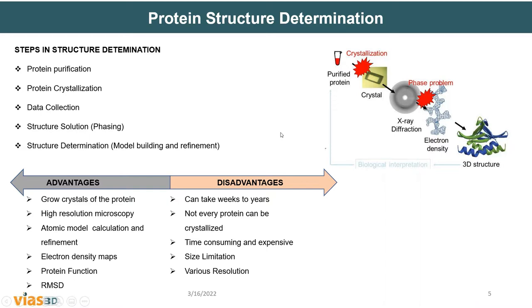The major advantages of X-ray crystallography: you can grow crystals of the protein, high resolution microscopy is needed, atomic model calculation and refinement is necessary, electron density maps are produced, you can determine protein function, and you get RMSD — root mean square deviation — to monitor any deviation in the protein. Disadvantages include that it can take weeks to years, it is time-consuming and expensive, there is a size limitation, and resolution varies.